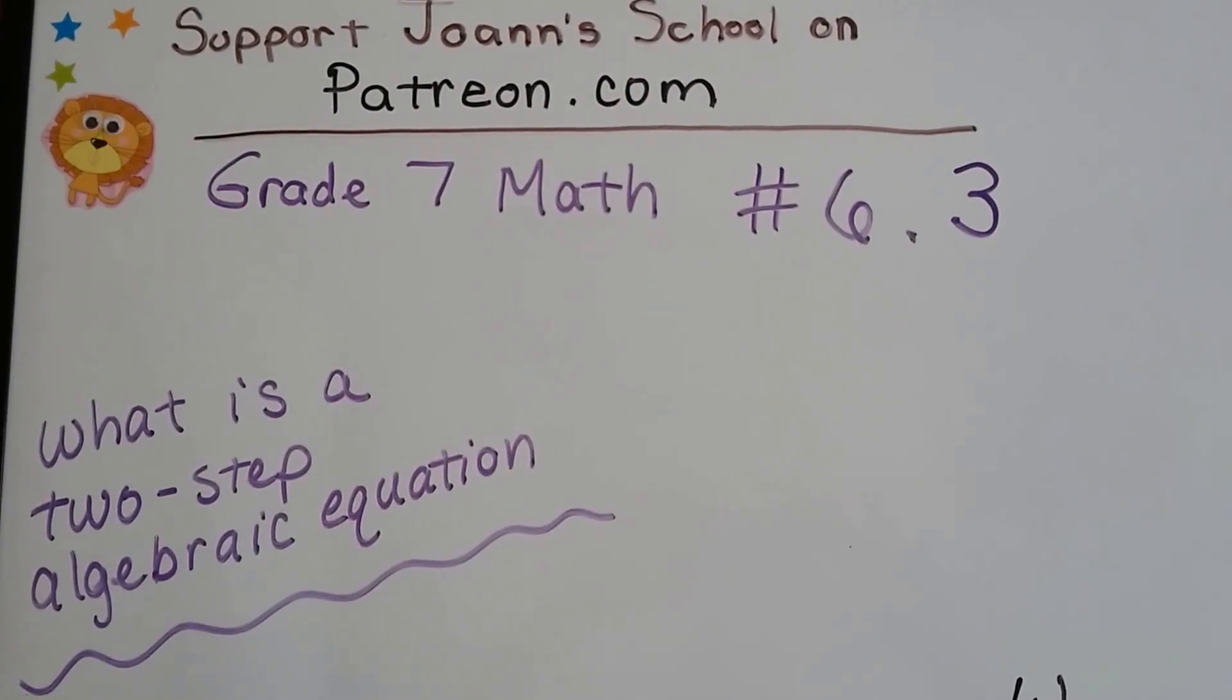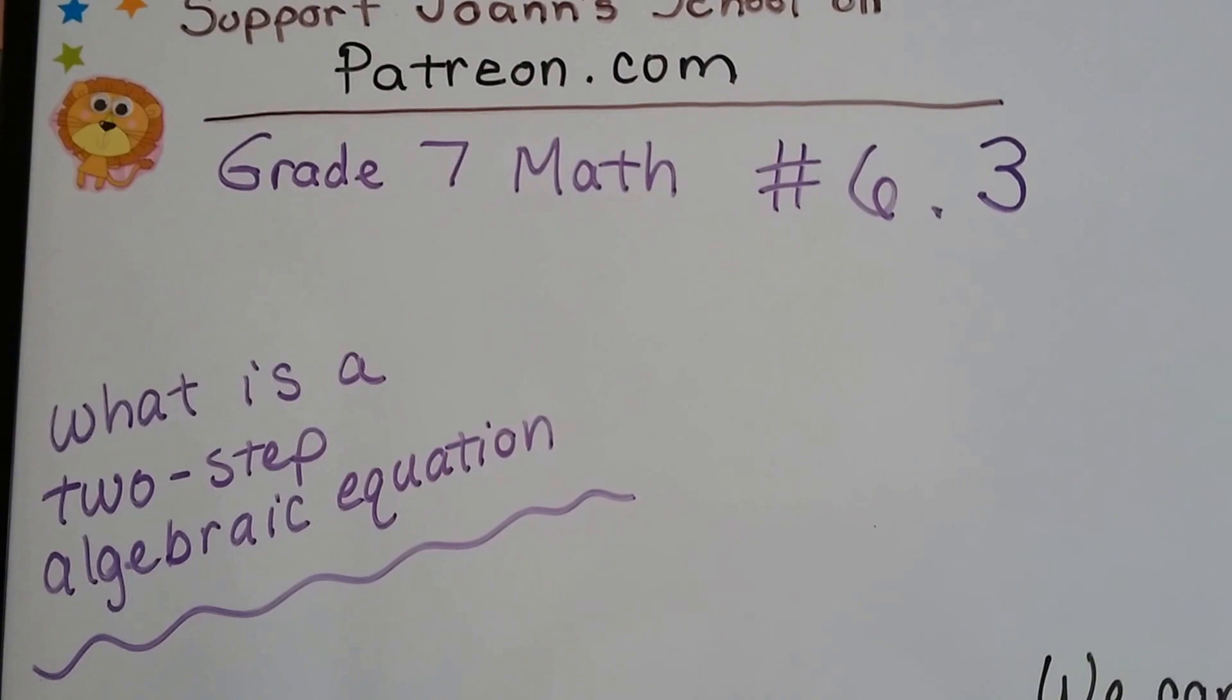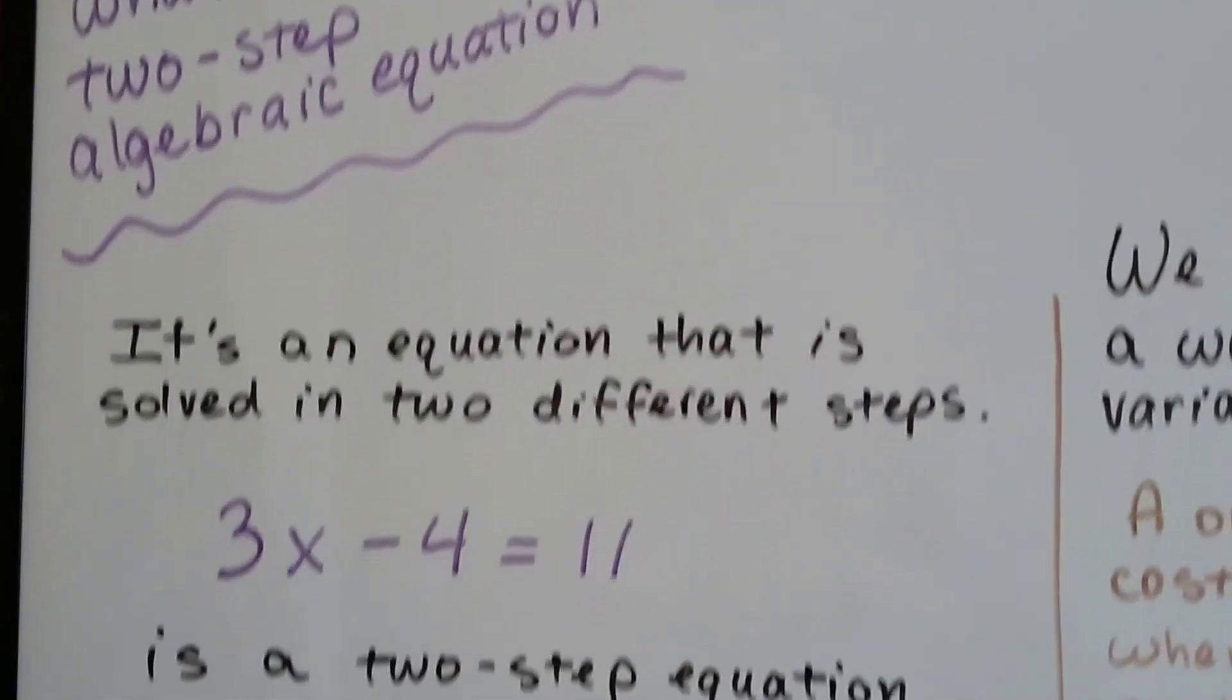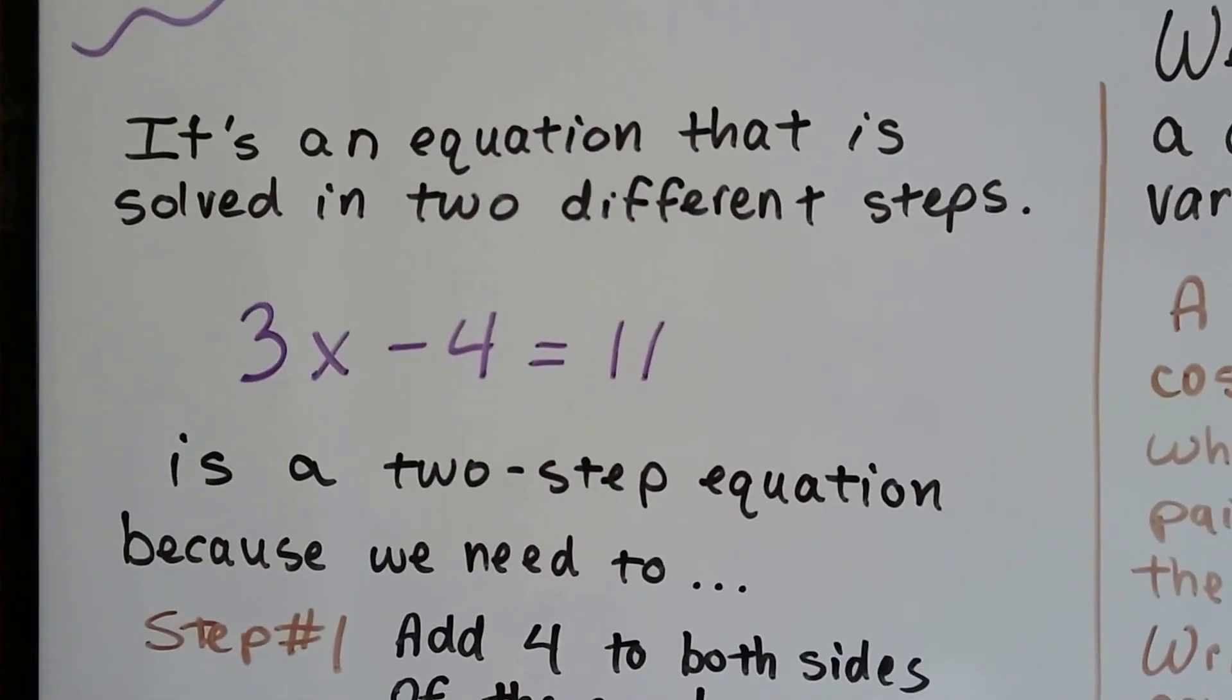Grade 7 Math number 6.3. What is a two-step algebraic equation? Well, it's an equation that's solved in two different steps.